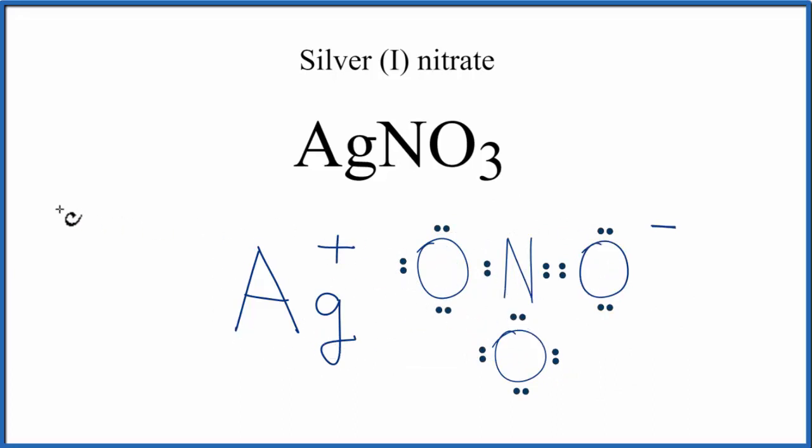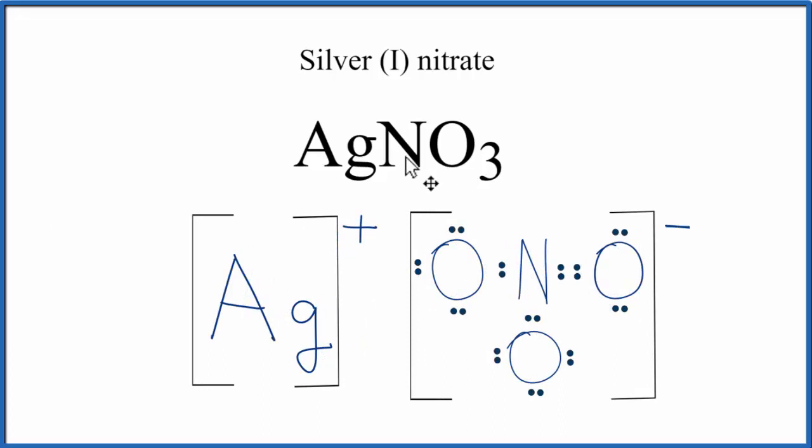We should put brackets around the nitrate ion, and you'll sometimes see brackets around the cation, the positive metal ion. And that makes this the Lewis structure for AgNO3, silver one nitrate.